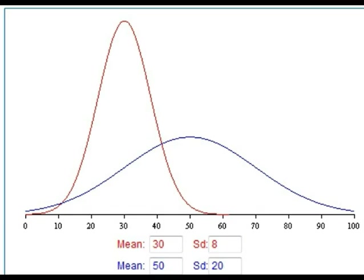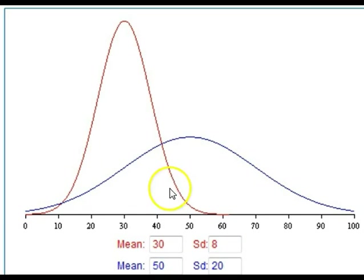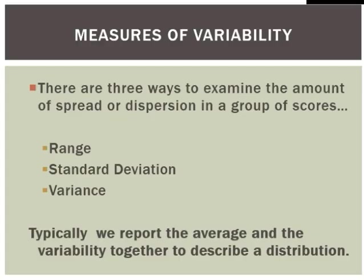Even when central tendency does vary — here we have a mean, median, and mode that's higher than the red distribution — we still need to know something about the spread of values about that mean, median, and mode. So whenever we're describing data, we need both a metric for central tendency and a metric for variability. We're really trying to quantify how our observations typically differ from the mean value.